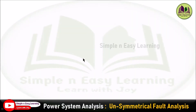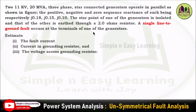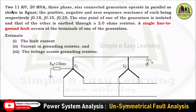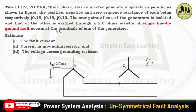Unsymmetrical fault analysis: solved problem based on single line to ground fault. Consider the given problem: two 11 kV, 20 MVA three-phase star-connected generators operating in parallel. The positive, negative, and zero sequence reactances of each are J0.18, J0.15, and J0.10 respectively. The star point of one generator is isolated and that of the other is grounded through a 2 ohm resistor. A single line to ground fault occurs at the terminals of one of the generators. Estimate the fault current, the current in the grounding resistor, and the voltage across the grounding resistor.